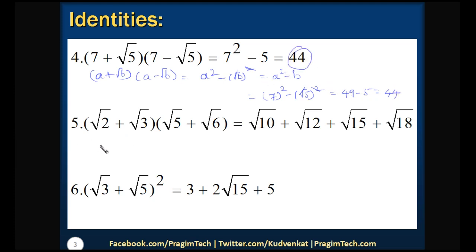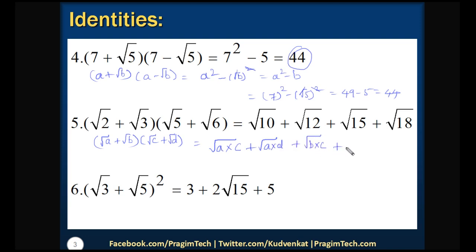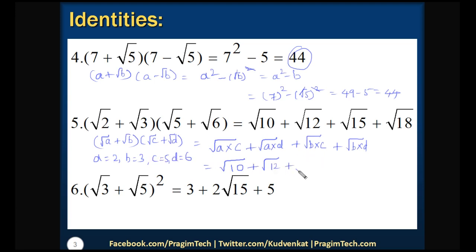Let us look into the next identity, which is in the form of root a plus root b into root c plus root d. Following the multiplication process — multiplying root a with root c plus root d, plus root b into root c plus root d — it gives: square root of ac plus square root of ad plus square root of bc plus square root of bd. In the example, a is 2, b is 3, c is 5, d is 6, giving square root of 10 plus square root of 12 plus square root of 15 plus square root of 18.